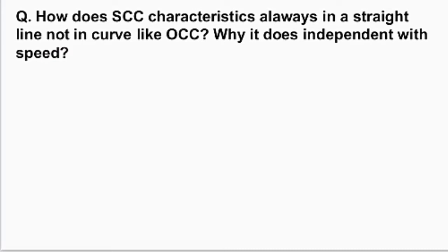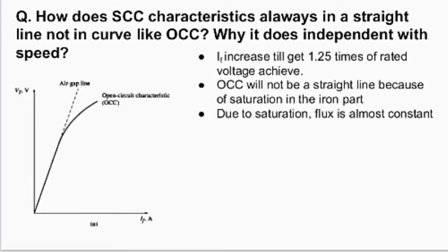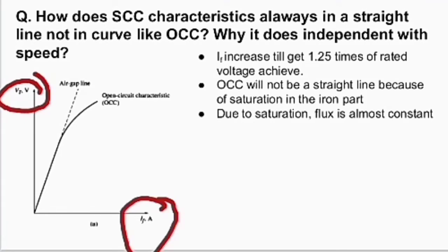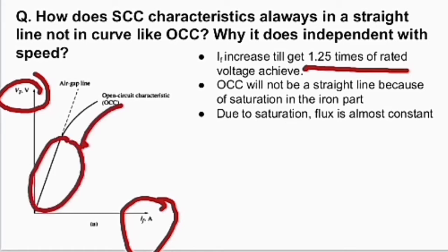To understand the answer, you should first know why the OCC curve is not a straight line — or why it is bent. The OCC characteristics is a graph between terminal voltage and field current with stator winding open-circuited. When field current increases up to 1.25 times the rated value, the rated voltage is achieved. You see there is a bend after a straight line — this is due to saturation in the iron core.